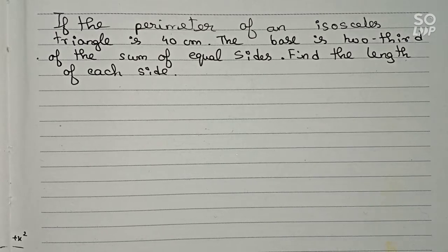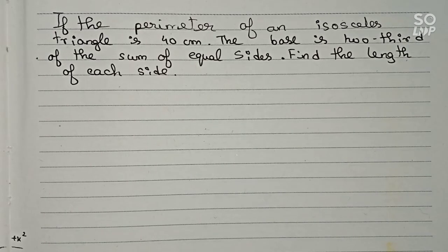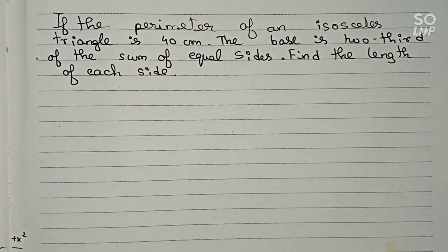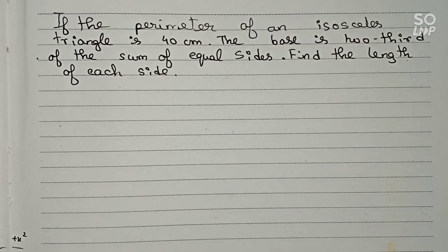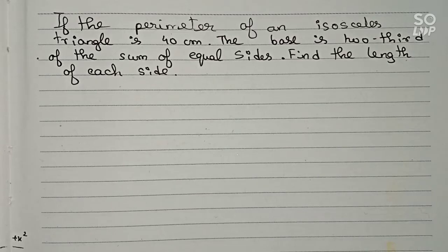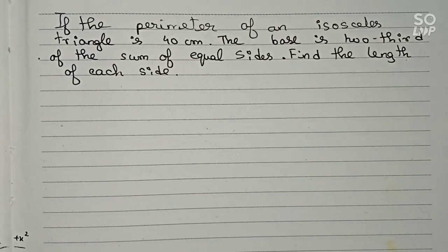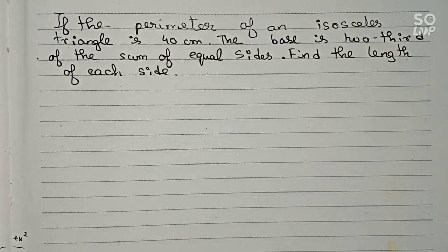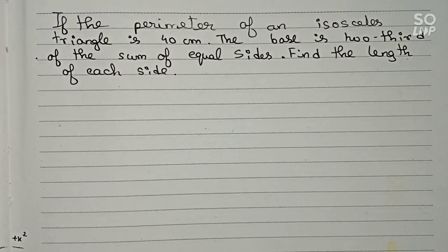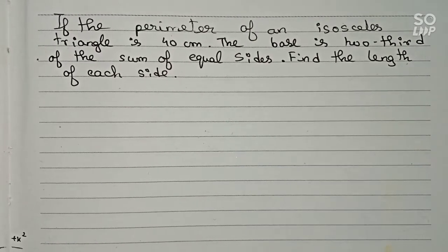Hello guys, welcome to this video. In this video, our question is: if the perimeter of an isosceles triangle is 40 centimeters and the base is two-thirds of the sum of the equal sides, find the length of each side.